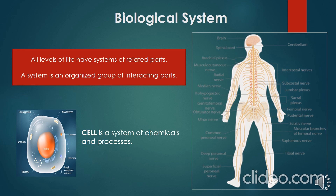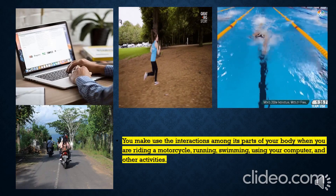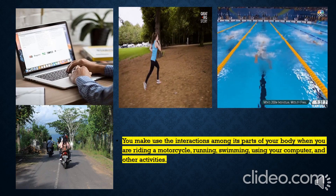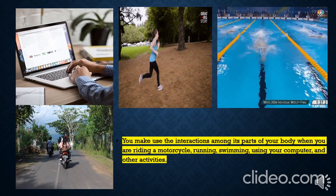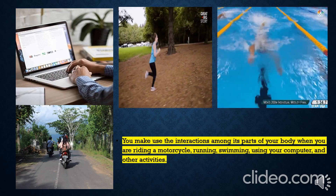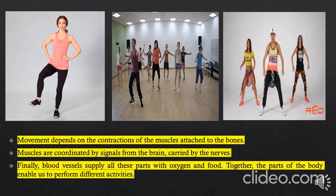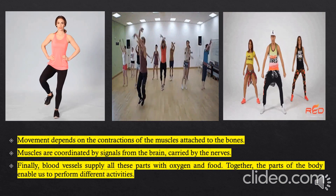A biological system is a complex network of biologically relevant entities. It captures the importance of how a combination of parts can result in a more complex organization. Systems at all levels of life have related parts. For example, for the human body system, every part has a system of related parts — a cell is a system of chemicals and processes, and our body, like other organisms, is a living system.